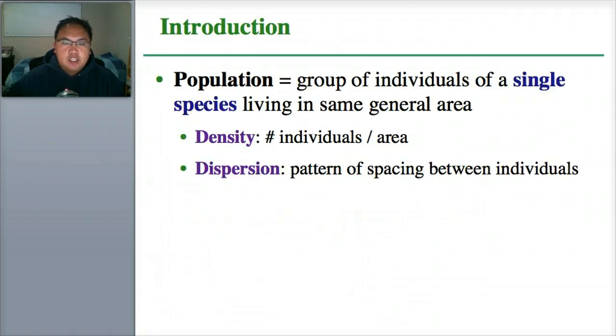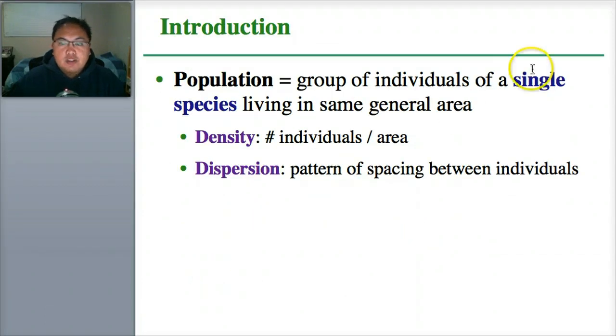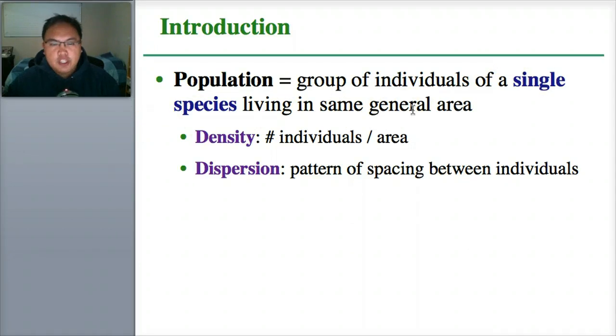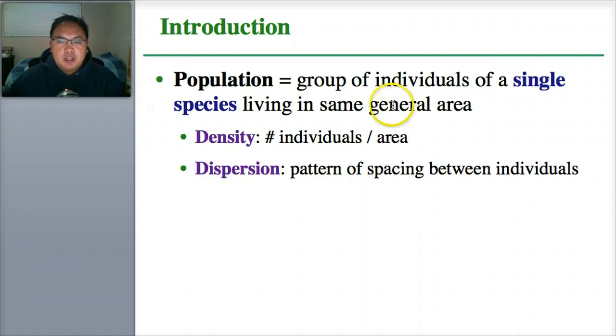First of all, a population is a group of individuals of a single species living in the same general area. So like a whole bunch of dogs, a whole bunch of humans — just the same species, a whole bunch of them all in the same area.